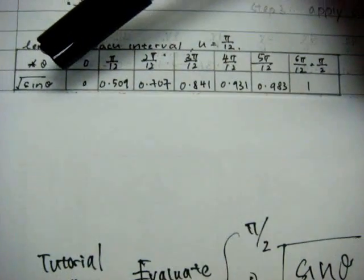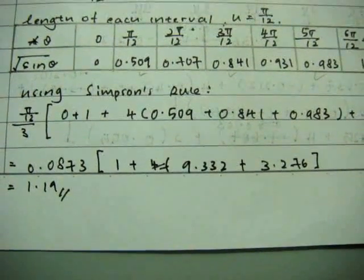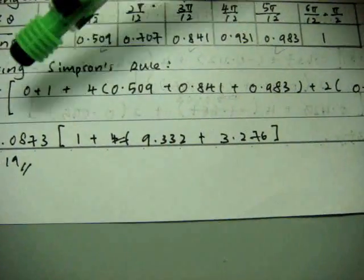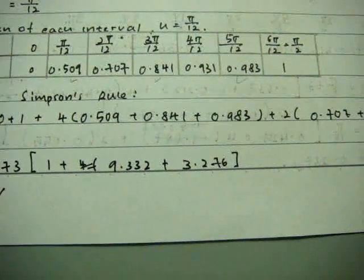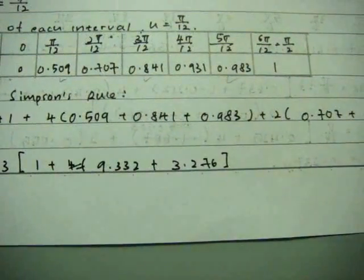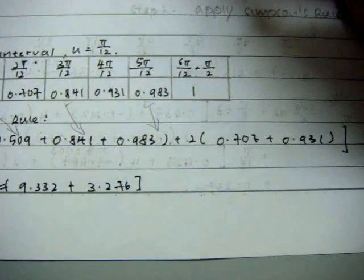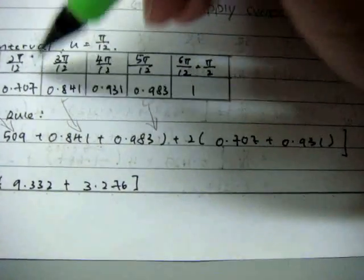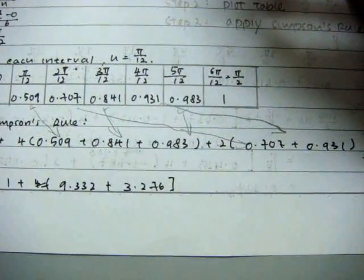After this, we move on to evaluate the value of square root sin theta. By using Simpson's rule, I will find my answer: h over 3 which will give me π over 12 over 3 multiplied by 0 plus 1, which comes from here and here, plus 4 multiplied by 0.509 plus 0.841 plus 0.983. And all these values come from here, here, and here. These are my odd ordinates. Then, you have to add 2 multiplied by 0.707 plus 0.931, which comes from here and here.